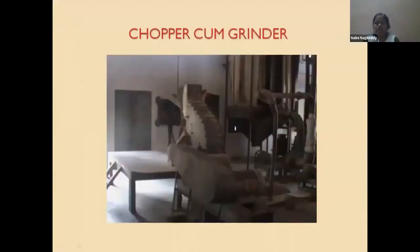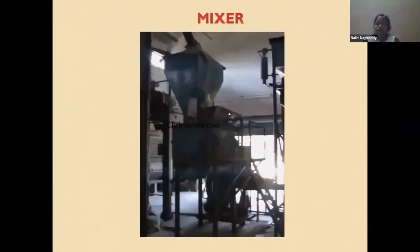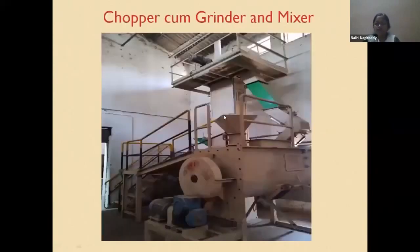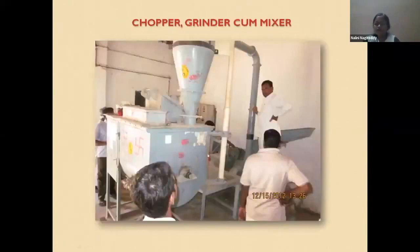The chopper-cum-grinder can be used to grind crop residues as well as concentrated ingredients. It first reduces crop residues to small particles, then grinds them into very fine particles. A mixer is then used for combining. The combination chopper-grinder-cum-mixer machine is also fabricated and available.